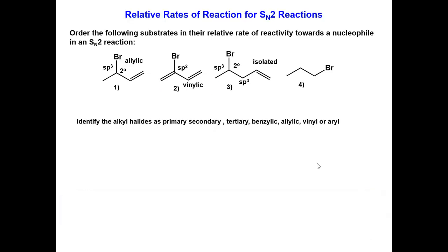Compound 4 is a primary alkyl halide. The general rate of reaction of an SN2 reaction with different electrophiles is: benzylic is greater than or approximately equal to allylic because of the adjacent pi bond delocalized electrons in the transition state.